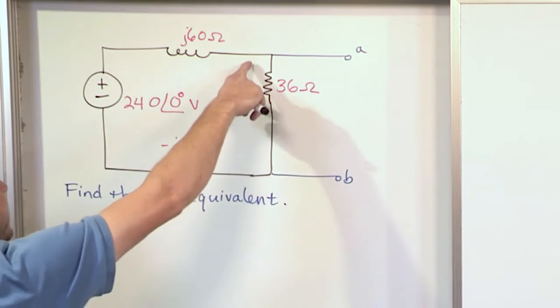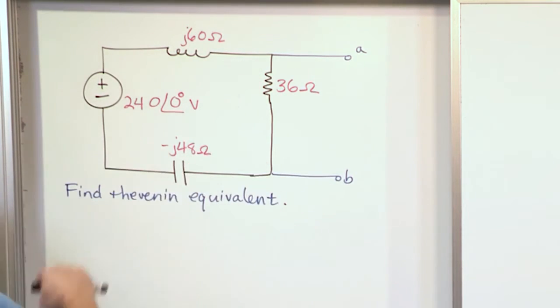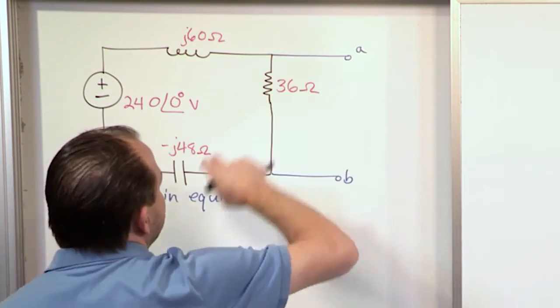So you can envision the current going around and around like this. There'll be a voltage drop across this, a voltage drop across this, and a voltage drop across this. We want to figure out what this voltage drop is.